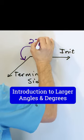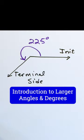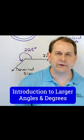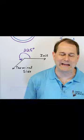So in this example, this is 225 degrees. It is perfectly valid to have an angle larger than 90 degrees, an angle larger than 180 degrees.